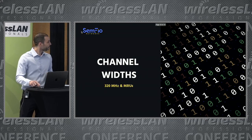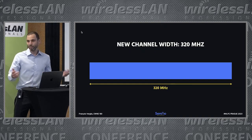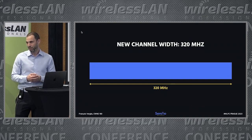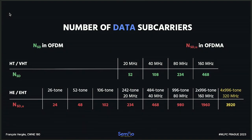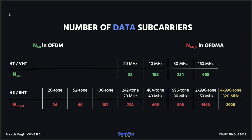New channel width: we have 320 megahertz wide channels. How does that impact data rates? We subdivide our channels into subcarriers or tones, so if we have larger channels we have more tones. In the 320 megahertz wide channel we have 3,920 subcarriers we can actually send data on. More tones means we can send more data — larger channels give us larger data rates.